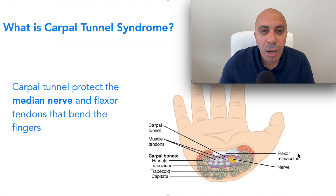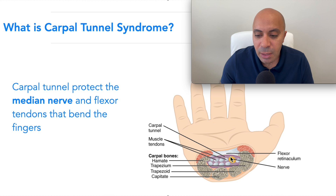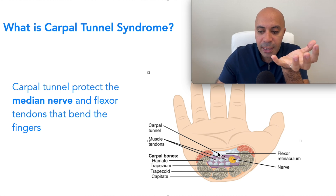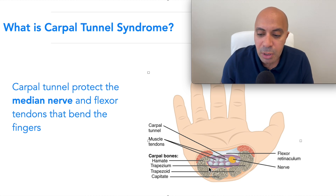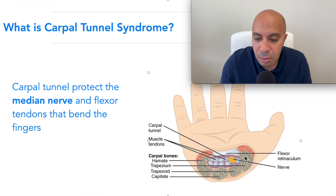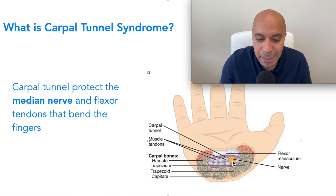The carpal tunnel is actually protecting your median nerve, and the median nerve is the one you will have symptoms with in carpal tunnel syndrome. As you see here, this is a tunnel — your hand is like this, and this is a view from the side of your hand. We have the carpal tunnel here, and the median nerve is shown in yellow in this image. We also have the flexor retinaculum, which is a fascia layer that protects the median nerve.